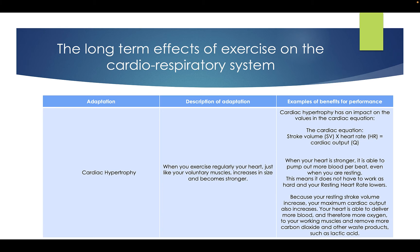Cardiac hypertrophy: when you exercise regularly your heart, just like voluntary muscles, increases in size and becomes stronger. Cardiac hypertrophy has an impact on the values of the cardiac equation. The cardiac equation is stroke volume times heart rate equals cardiac output — so how much blood you can forcibly pump out per beat (stroke volume), times how many times it is beating, creating your cardiac output. When your heart is stronger it is able to pump out more blood per beat even when you are resting, which means your resting heart rate lowers. Because your resting stroke volume increases, your maximum cardiac output also increases, allowing your heart to deliver more oxygen to your working muscles and remove more carbon dioxide and other waste products such as lactic acid.